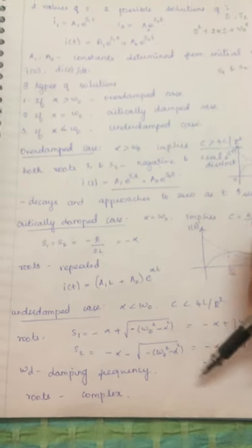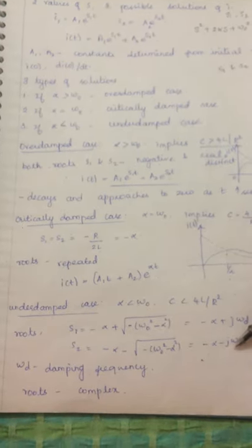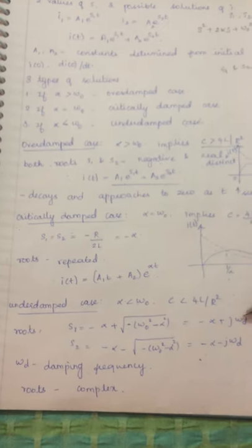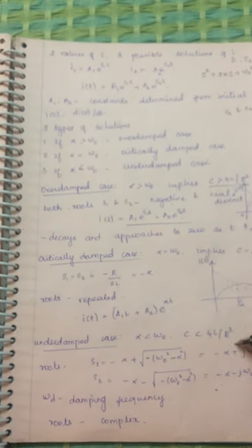The square root of omega_0² minus alpha² we take as omega_d. Omega_d is the damping frequency. Here we have two roots, s1 and s2.